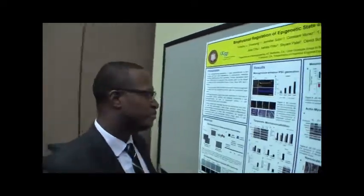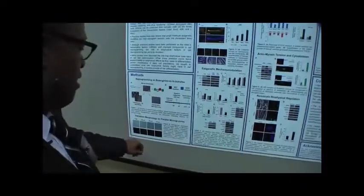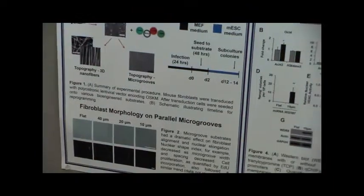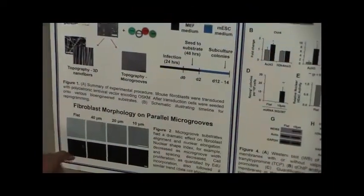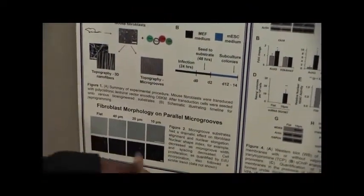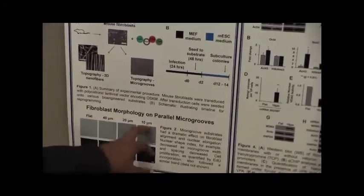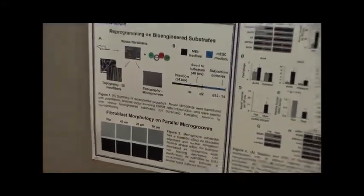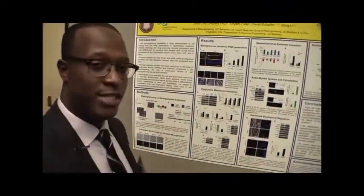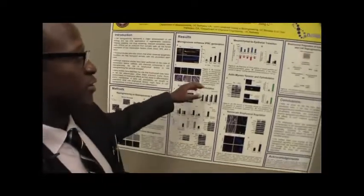My research looks at, for the first time, how surface topography affects this process. We have micro-groove surfaces fabricated from PDMS polymer where we culture cells on a flat surface and on micro-grooves of different widths and dimensions, ranging from 40 microns down to 10 microns. These different topographies have a dramatic effect on cell shape.